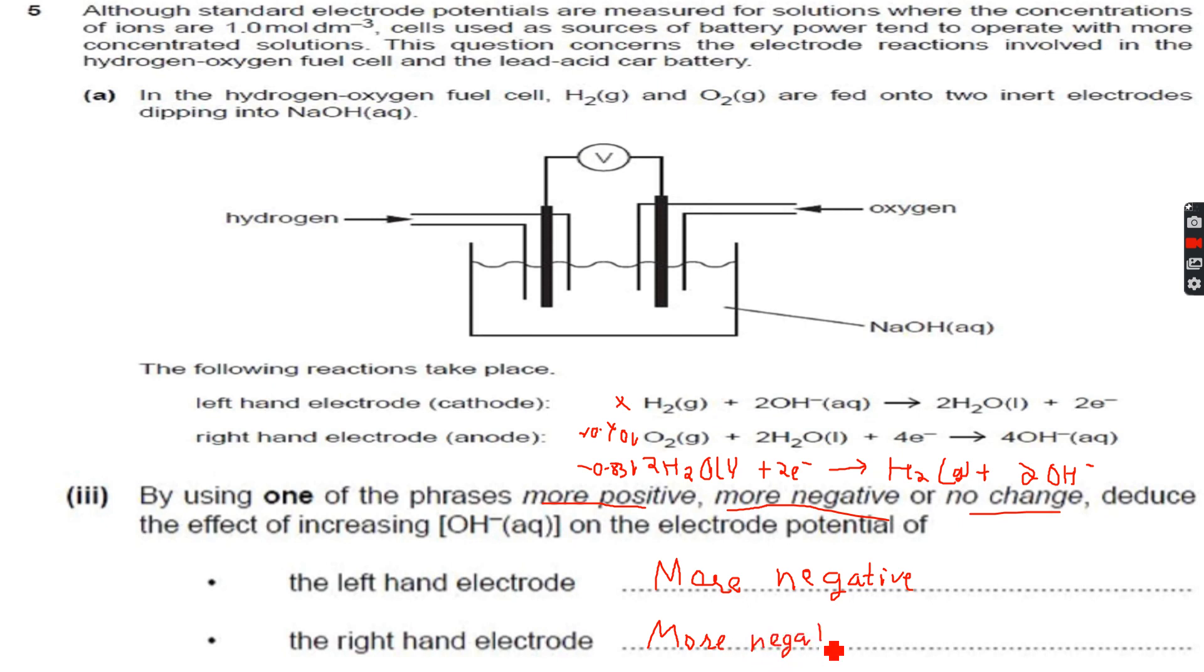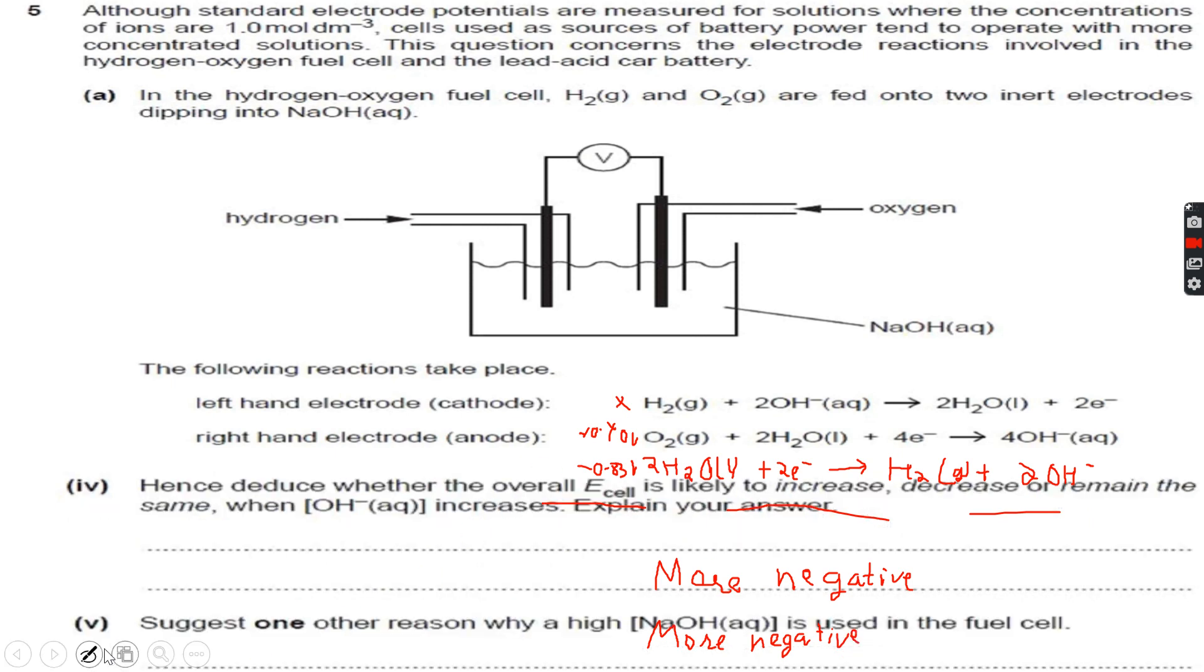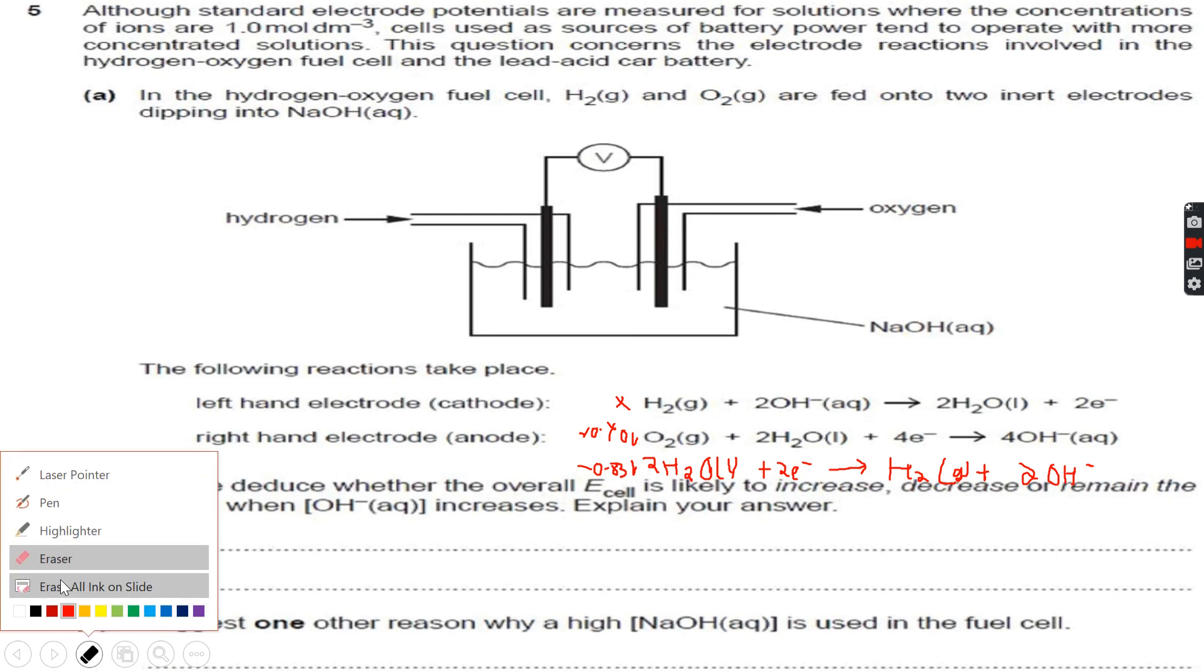More negative is the same as less positive. Now, let's deduce whether the overall E cell is likely to increase, decrease, or remain the same when OH- increases.